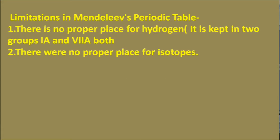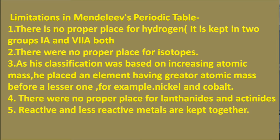Limitations of Mendeleev's periodic table: There is no proper place for hydrogen — it is kept in two groups, IA and VIIA, in Mendeleev's periodic table. There was no proper place for isotopes. As his classification was based on increasing atomic mass, he placed elements of greater atomic mass before lesser ones — for example, nickel and cobalt. There was no proper place for lanthanides and actinides. Reactive and less reactive metals are kept together in Mendeleev's periodic table.